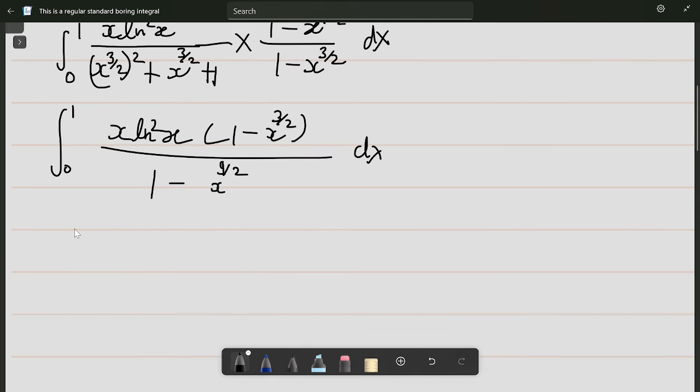From 0 to 1: x ln²x divided by (1 - x^(3/2)), and then sum from n equals 0 to infinity of x^(9n/2).